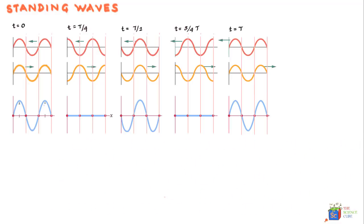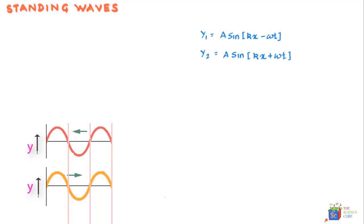So let us take two waves of the equations. One y1 is equal to A sin kx minus omega t, which obviously is moving in the positive x direction. And the second wave is y2 is equal to A sin kx plus omega t, which obviously is moving in the negative x direction.